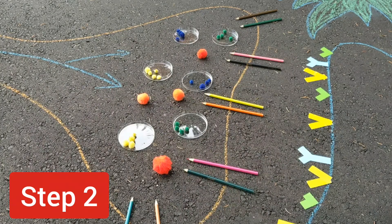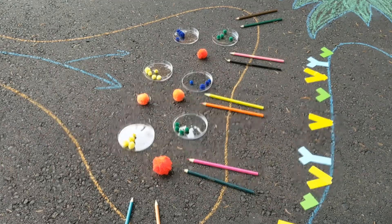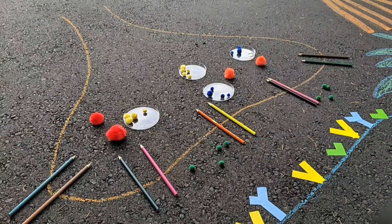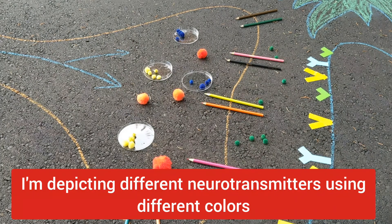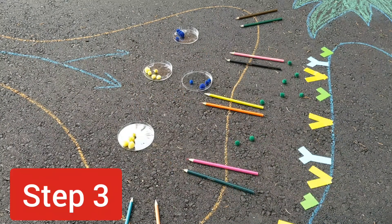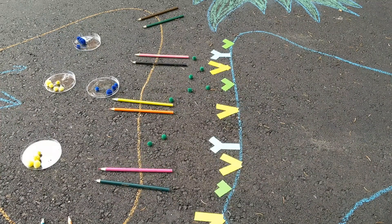Once calcium ions enter the axon terminal, they then tell the vesicles to move to the membrane and to fuse with the membrane and dump their contents into the synapse. I only represented one kind of neurotransmitter dumping into the synapse because depending on the signal, they don't necessarily all get triggered to go into the synapse. The neurotransmitters are going to find and attach to receptors on the membrane of the receiving cell. Each kind of receptor is specific to a certain kind of neurotransmitter.